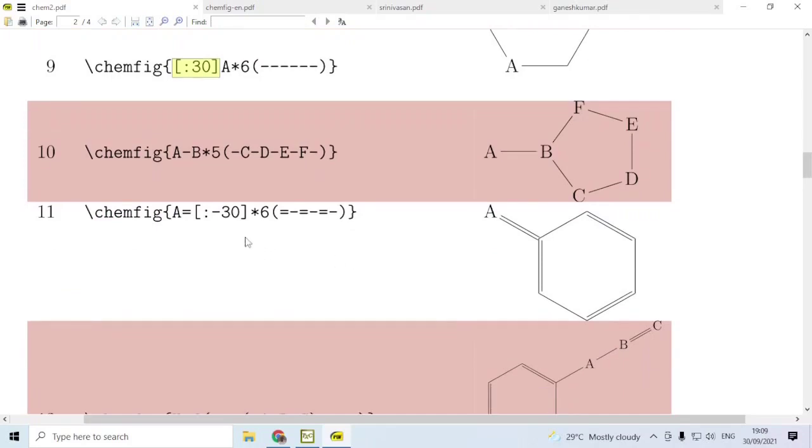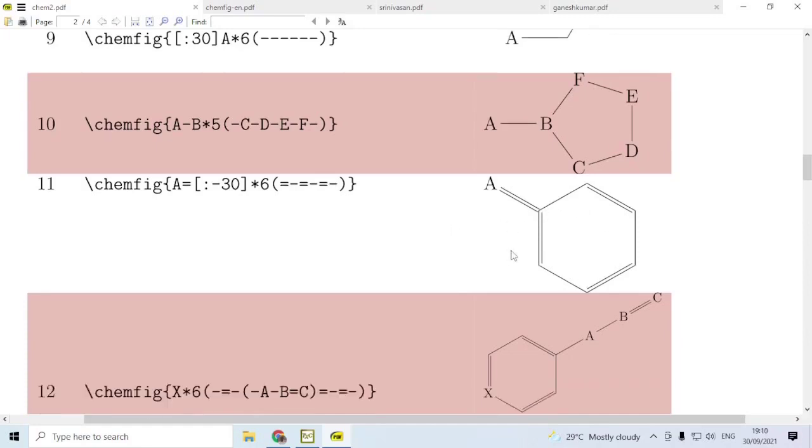Or you can also have a double bond, and then this ring is rotated by minus 30 degrees, and then you have a 6-sided ring. Then you get this structure possible as shown in line 11.